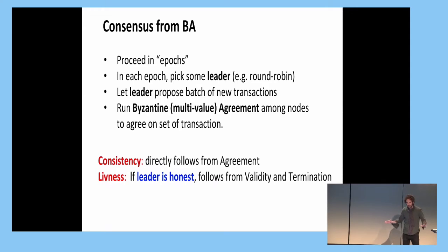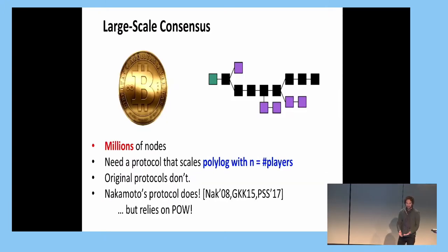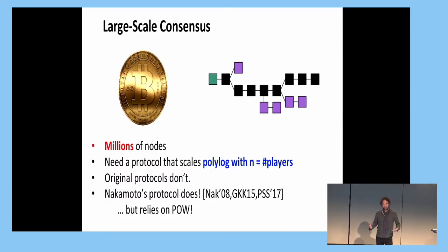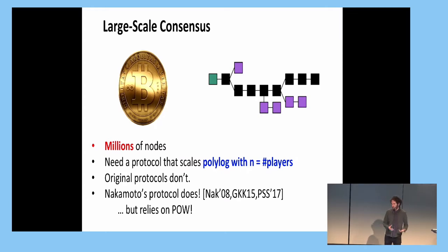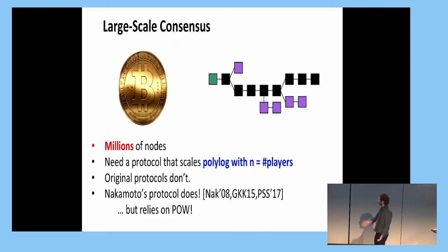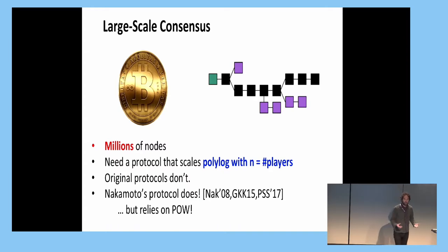In the era of Bitcoin, the topic is to handle consensus in a setting where the number of nodes is huge. The typical setting where the original protocols were considered had three, five, or six nodes — they were not meant to handle a scenario where you have a huge number of nodes, whereas Bitcoin's blockchain indeed handles this large number of players.